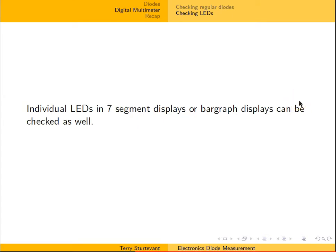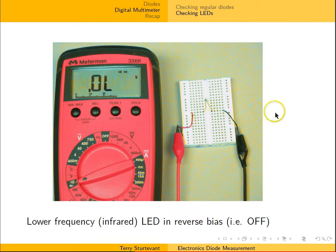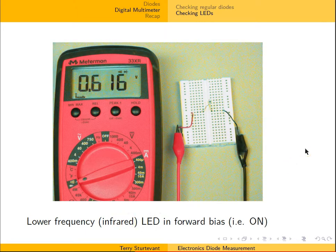Not only can you check individual LEDs, but you can check LEDs in seven segment displays or bar graph displays the same way. Here is testing one LED from a bar graph LED — here we have it off and on. Now there are other LEDs that can be tested, such as infrared LEDs. Here it is in reverse bias and in forward bias. Notice this voltage is much lower than it was for the red, yellow, green, or white LEDs — in fact, it's only about 0.6 volts instead of something like 1.6 or more.